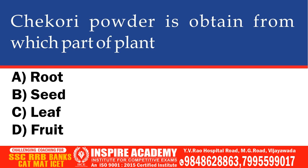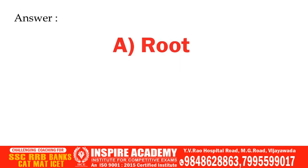Chicory powder is obtained from which part of plant? Options: Root, Seed, Leaf, Fruit. The correct option is Root.